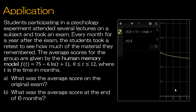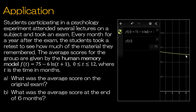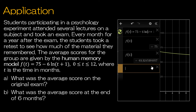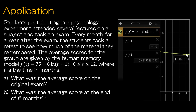The second question asks: what was the average score at the end of six months? Rather than trying to read a value off the graph, it makes much more sense to compute f(6), which gives approximately 63.32. Up next we're going to take a look at the properties of logarithms.